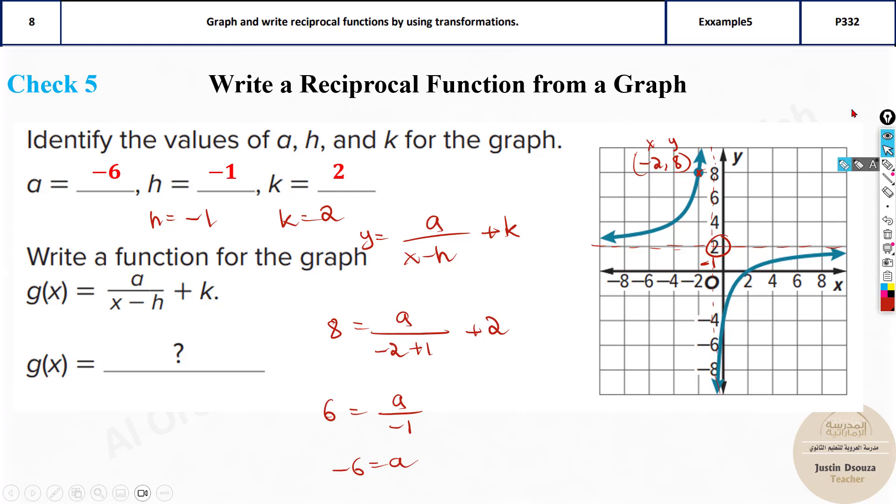Now all you have to do is substitute all the knowns. Keep x and g of x as it is. So all you do is substitute minus 6 divided by x minus of minus 1 will be plus 1 plus 2. This will be the final answer. Here it's g of x. That's it. You can see that will be the final answer. Minus 6 by x plus 1 plus 2.